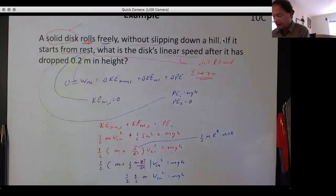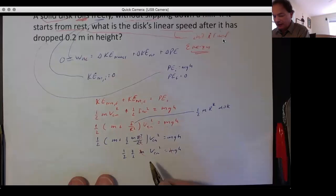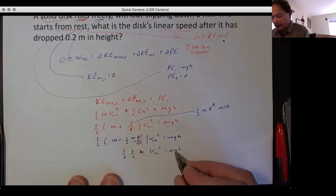And you are now left with 3/4 over here. You bring that over, you've got 4/3. Take the square root: v_cm is equal to the square root of 4/3 gh. And if you run through the calculator on this one, it's 1.62 meters per second.